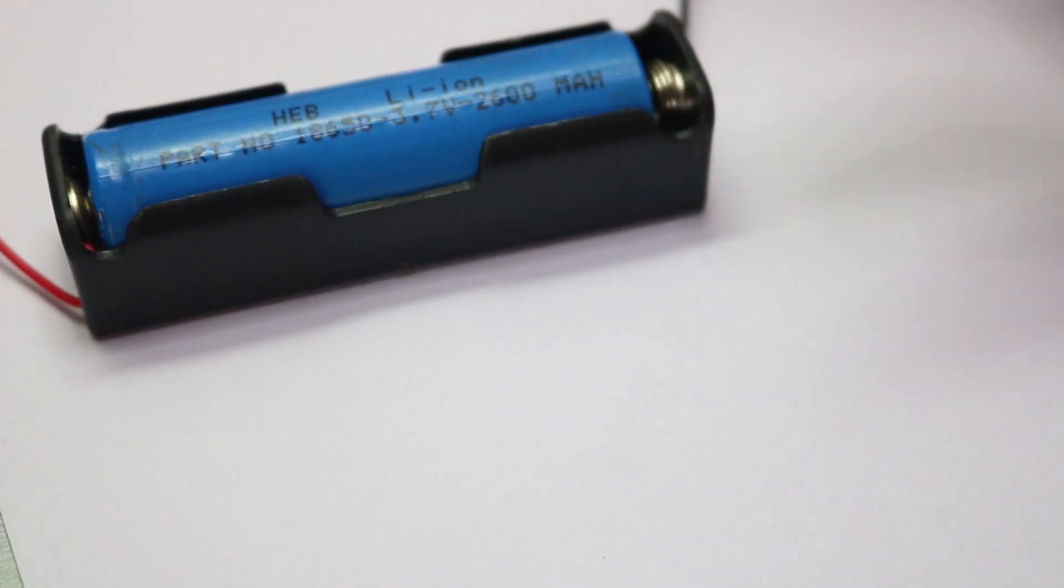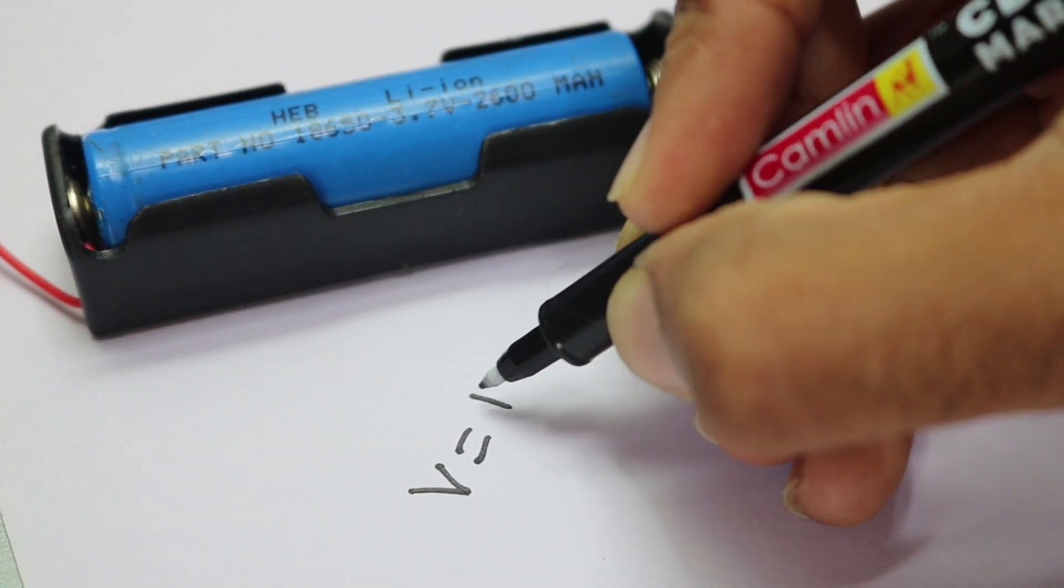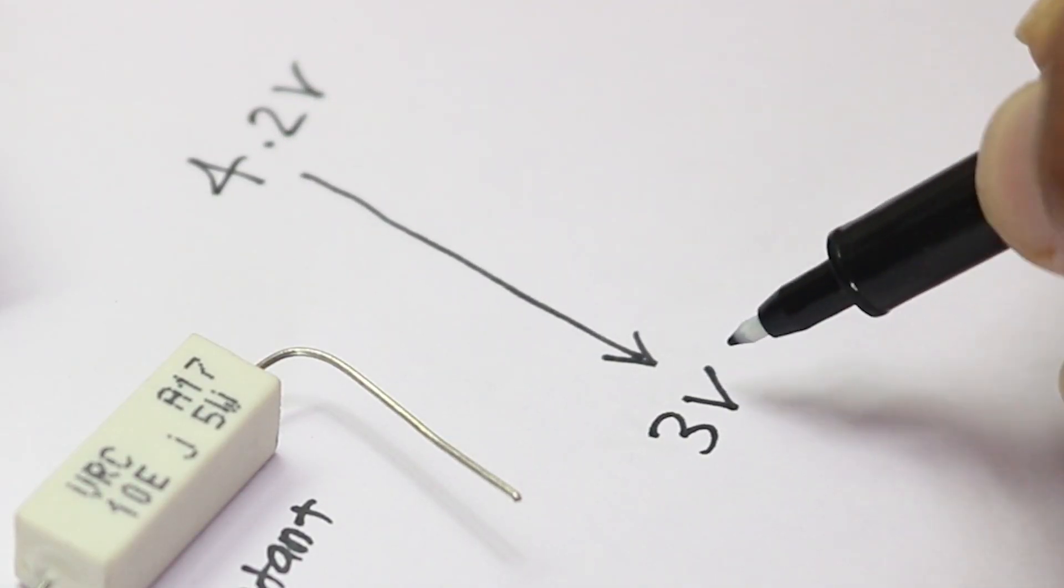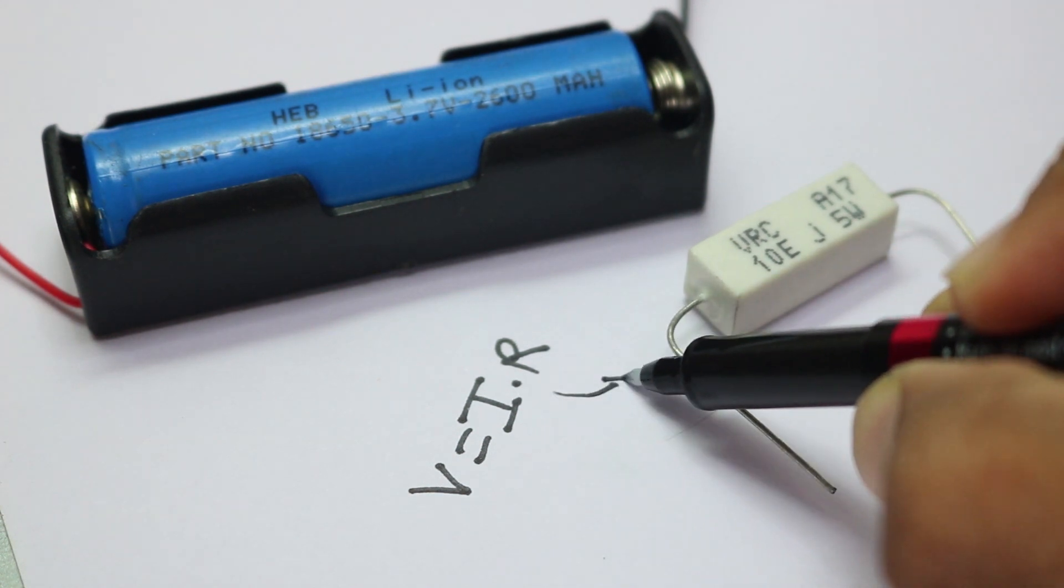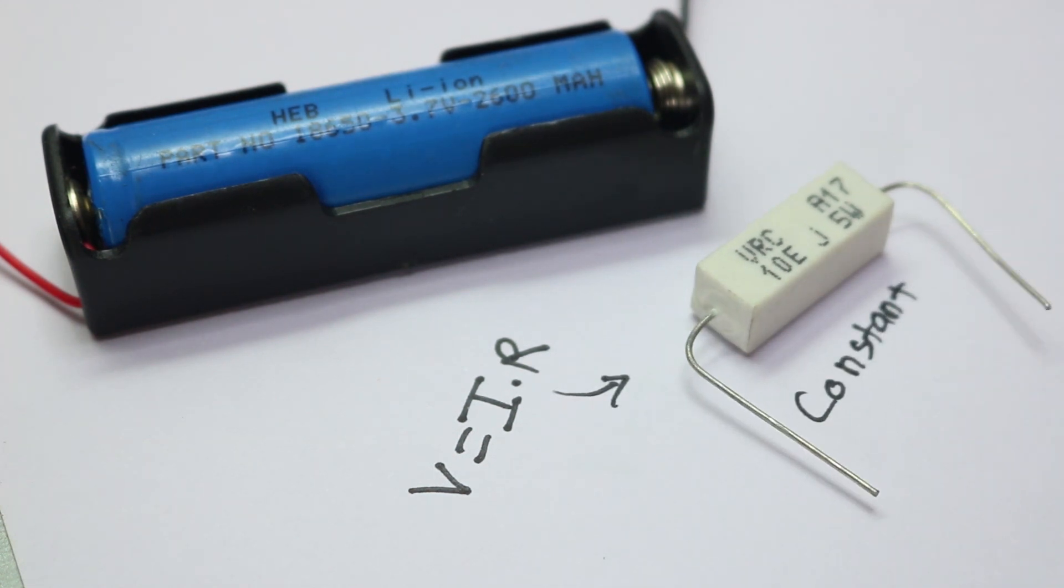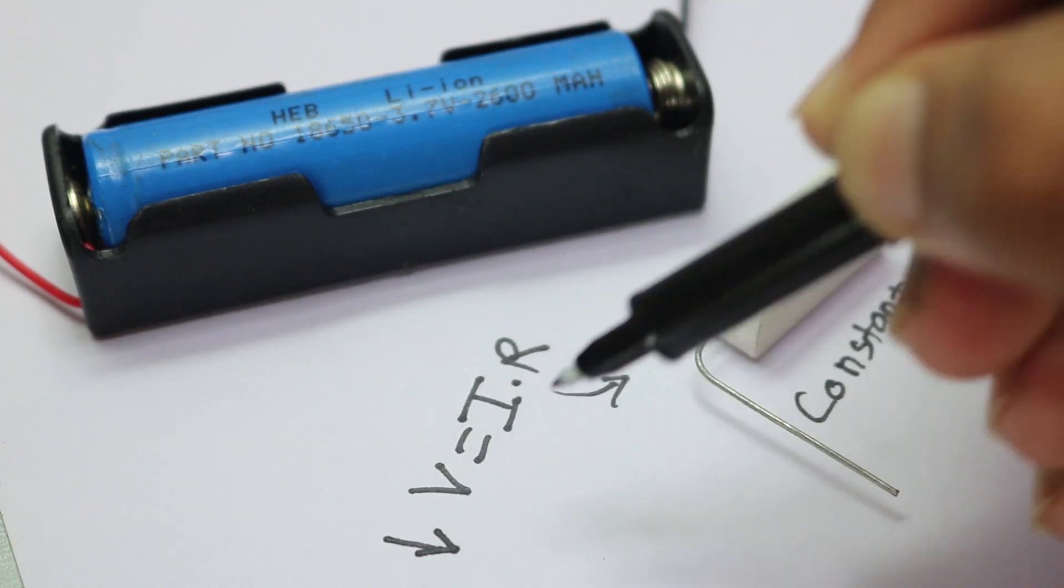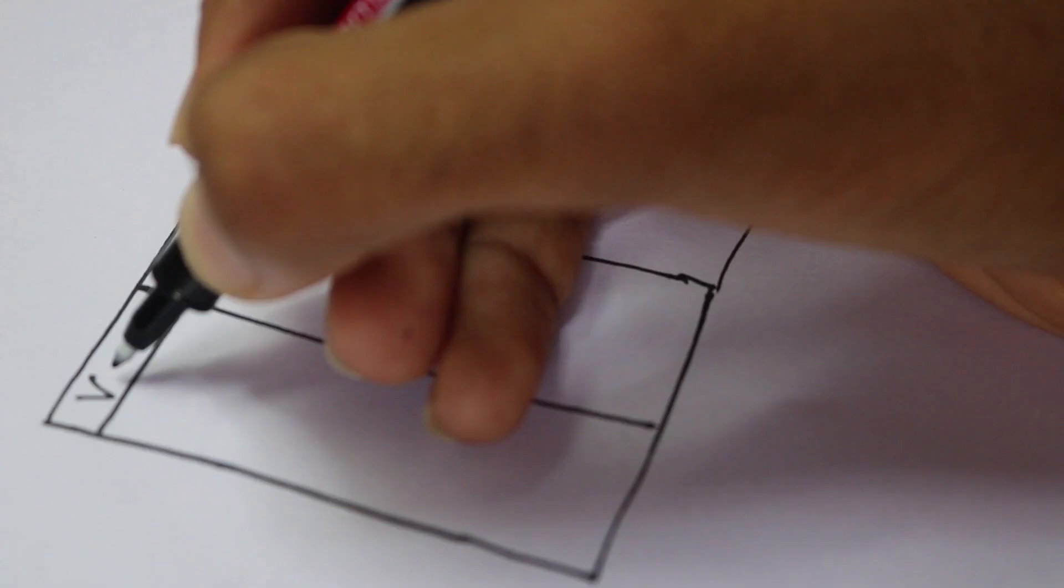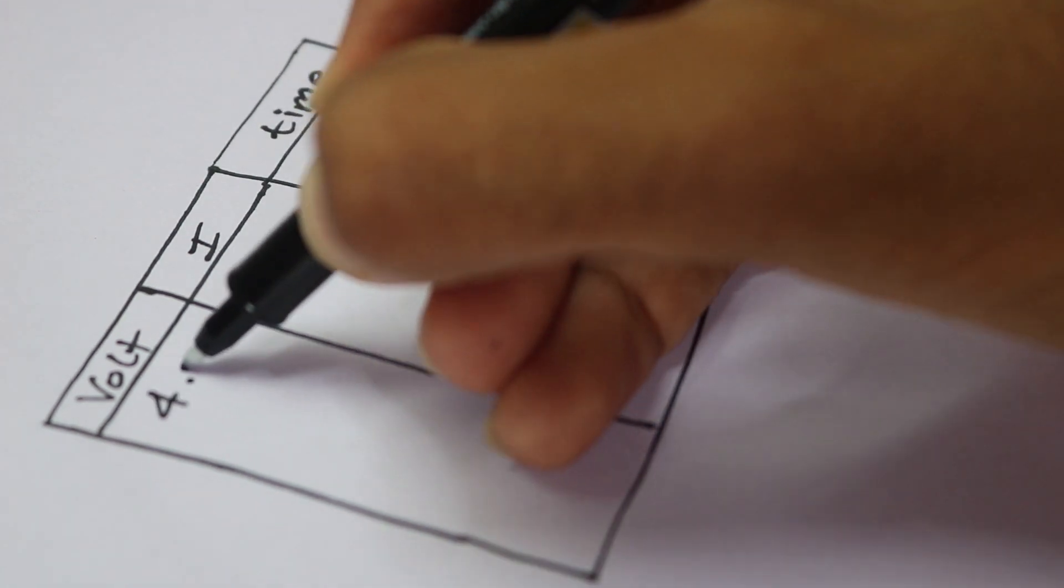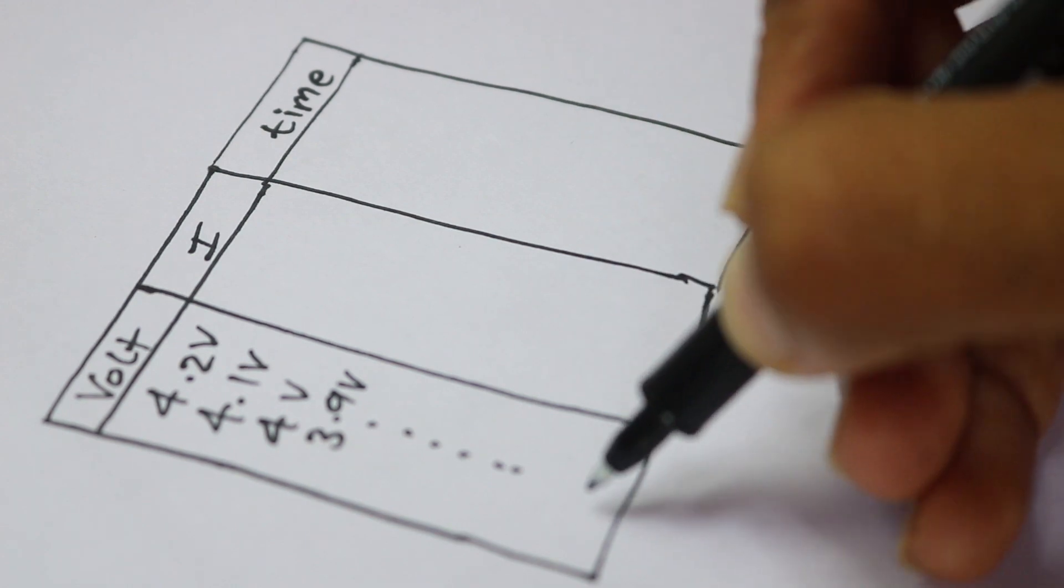But this is practically not possible because we all know voltage equals current times resistance. Initially battery voltage will be 4.2 volts and if I keep the resistance constant there will be some current flowing through the load, but over time battery voltage will decrease and so does our current. This will make our calculation much more difficult than expected because we will need to measure the current and time for every instance.